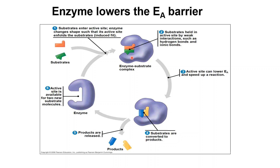New bonds are formed and products are produced. The products can be seen to have a different shape from the substrates. Once the products are produced, they are released from the active site of the enzyme, and the enzyme can participate in the next chemical reaction.